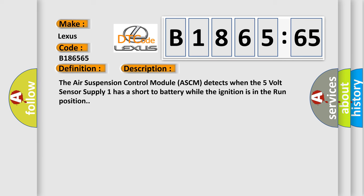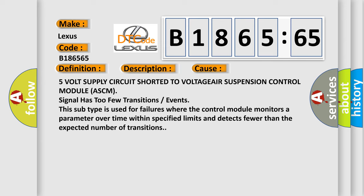And now this is a short description of this DTC code. The air suspension control module ASCM detects when the 5V sensor supply 1 has a short to battery while the ignition is in the run position.